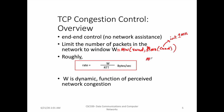For example, if we assume the maximum segment size (MSS) is 500 bytes and the RTT is 200 milliseconds, then the sending rate would be 500 bytes divided by 200 milliseconds, which equals 20 kilobits per second.